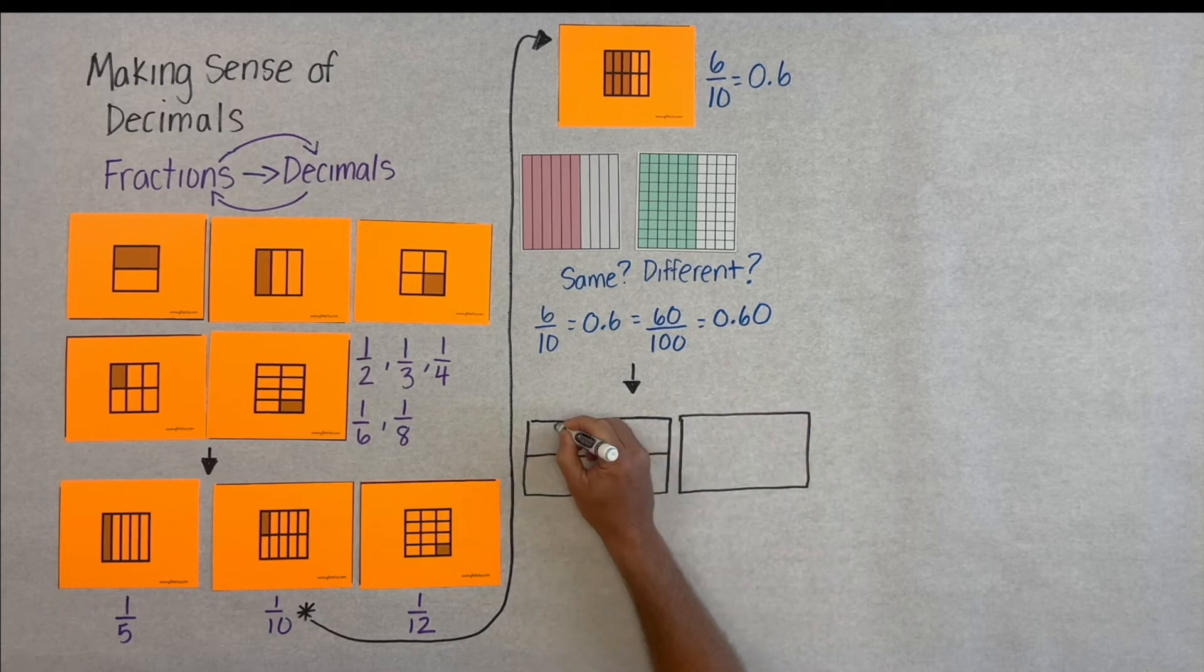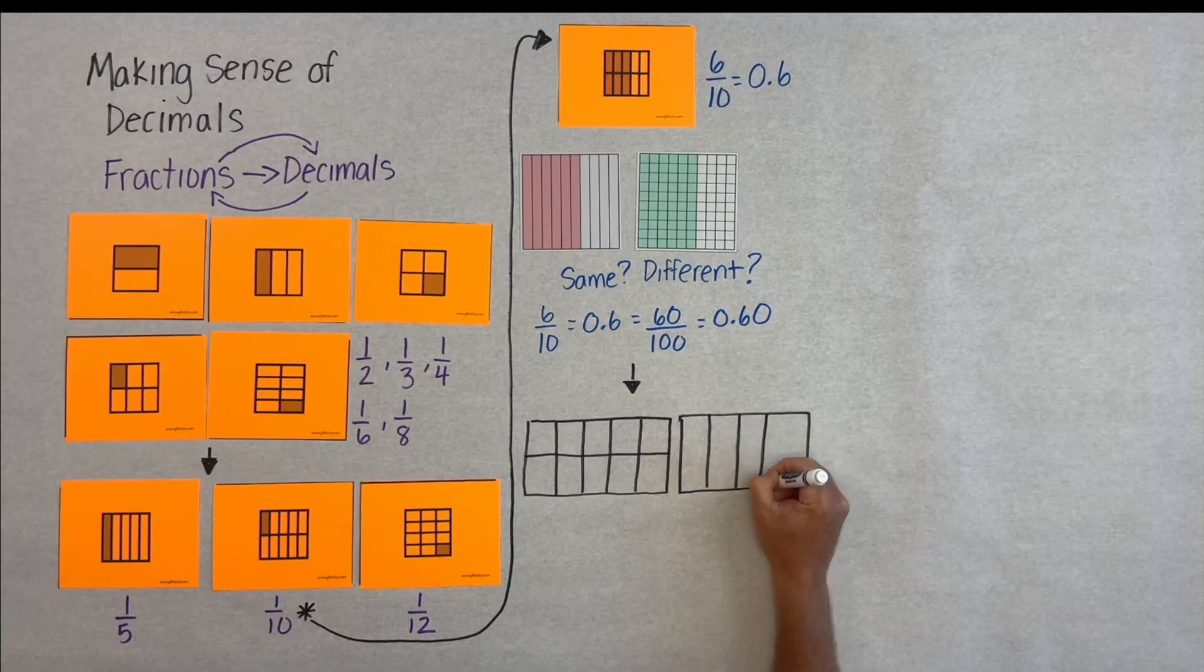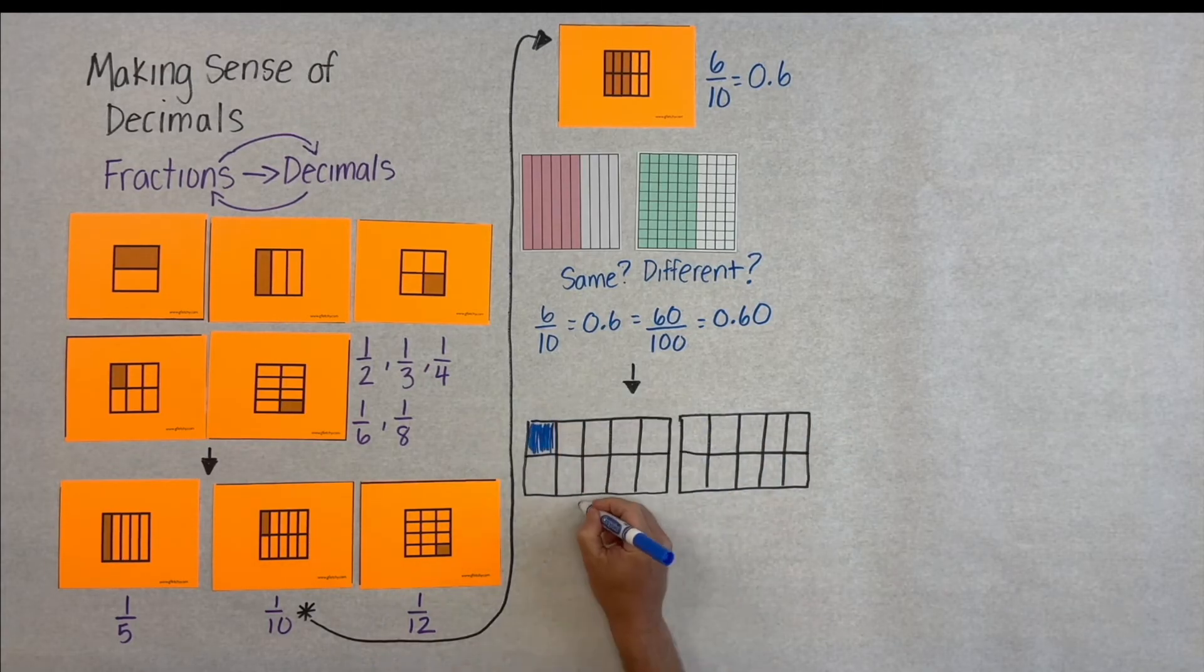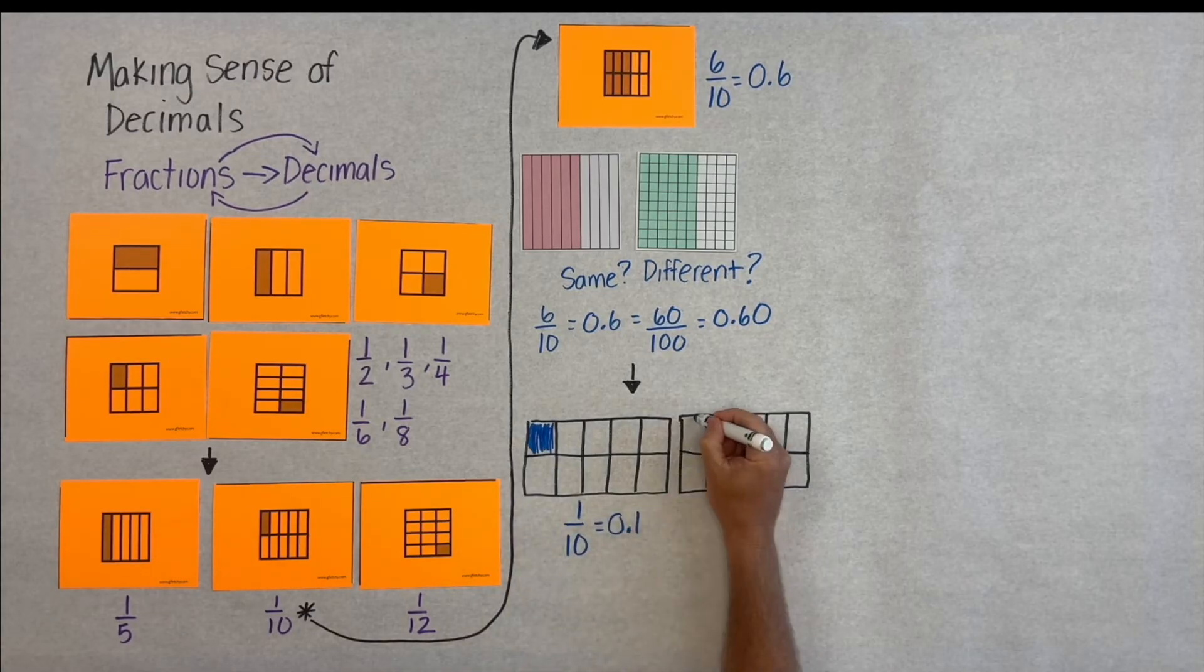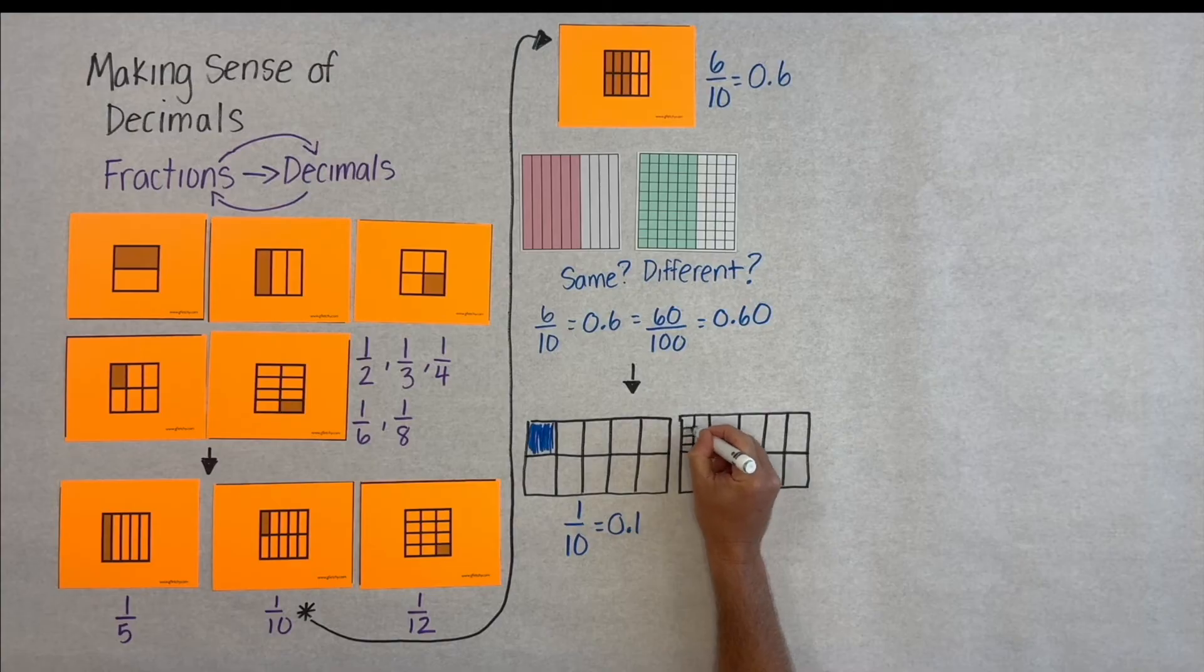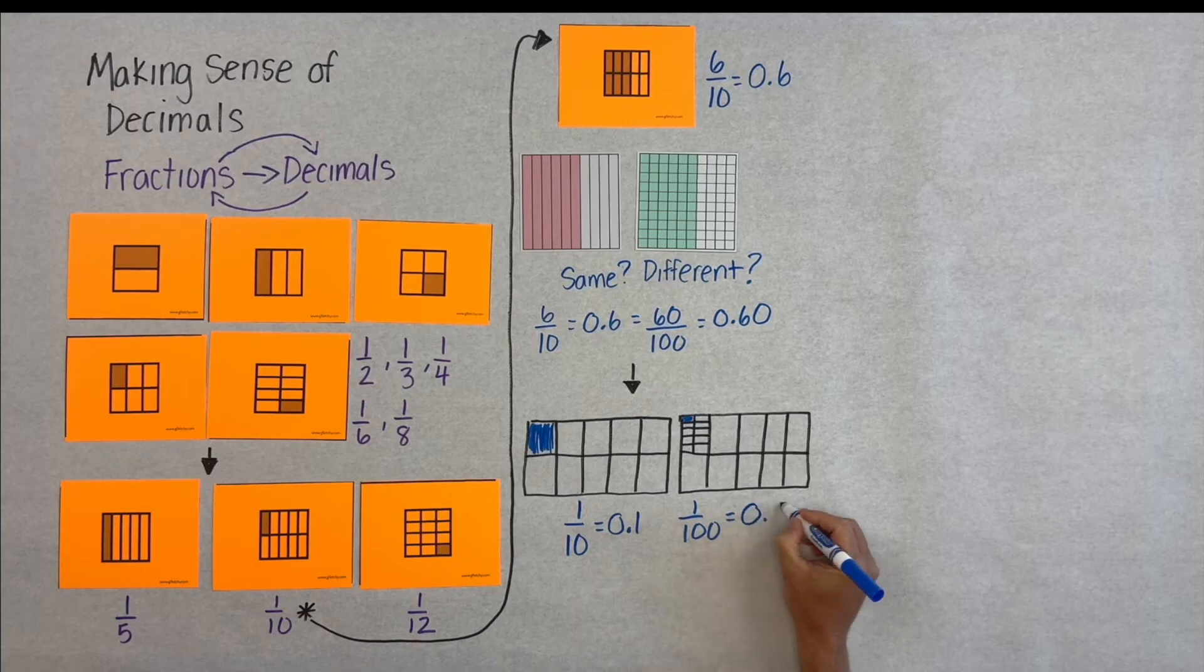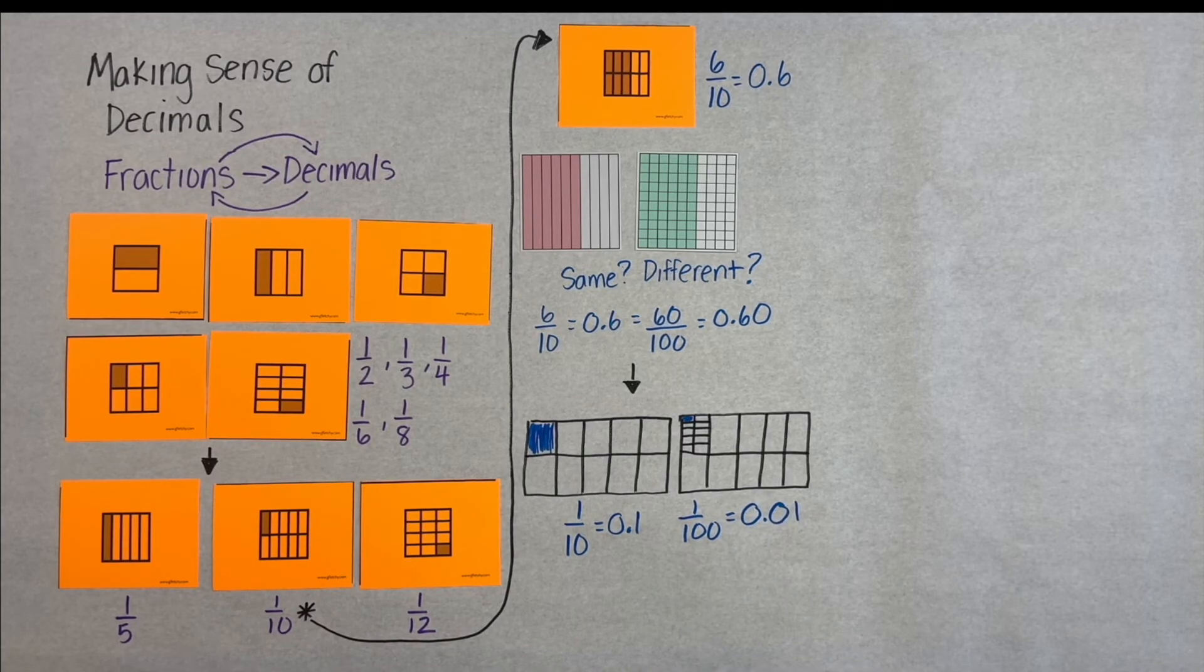Now, we might not always use decimal squares. So, maybe we connect back to a tool that students used in the early grades, a ten-frame. Well, here you can see that if a ten-frame is the whole, we have one-tenth of our ten-frame colored in. But then, this idea of decimals is that we can keep breaking down a unit into smaller units. So, here we have one-one-hundredth of the ten-frame.